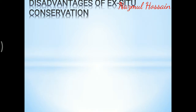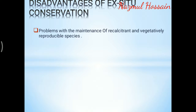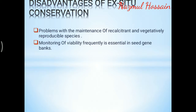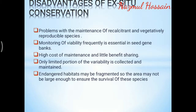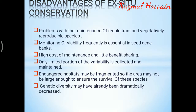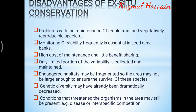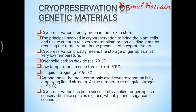Disadvantages of ex-situ conservation: problems with maintenance of recalcitrant and vegetatively reproducible species; monitoring of viability frequently is essential in seed gene banks; high cost of maintenance and little benefit sharing; only a limited portion of the variability is collected and maintained; endangered habitats may be fragmented, so the area may not be large enough to ensure survival of species; genetic diversity may have already been dramatically decreased; and conditions that threaten the organisms in the area may still be present, such as disease or interspecific competition.